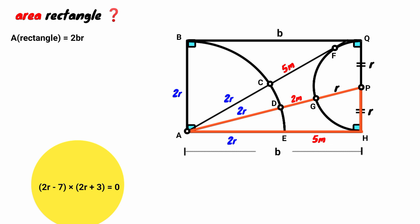Now 2R minus 7 into 2R plus 3 equals 0. That is, 2R minus 7 equals 0 or 2R plus 3 equals 0. Here take minus 7 to the right and divide both sides by 2. So R equals 7 over 2. Here take 3 to the right, divide both sides by 2. So R equals minus 3 over 2. That is R equals 7 over 2 or R equals minus 3 over 2.